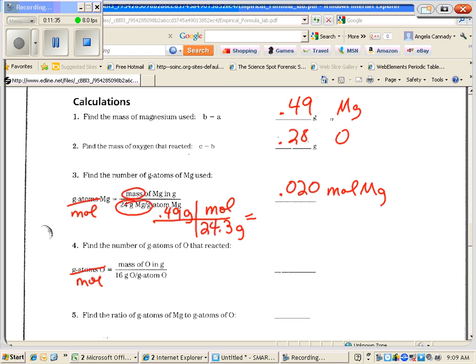I'm going to do the same step with my oxygen, and my mass of oxygen was 0.28. On the periodic table, the mass of oxygen is 16 grams per mole. And when I do that math to two significant digits, I get 0.018 moles of oxygen.